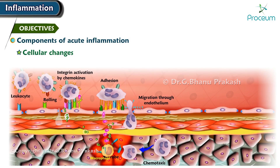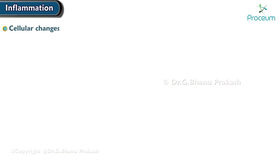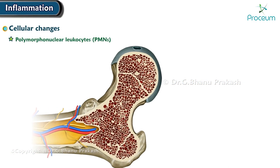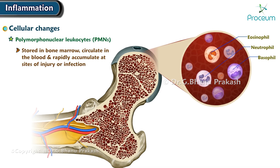Now, let's move on to cellular changes. Polymorphonuclear leukocytes, or PMNs, are stored in bone marrow, circulate in the blood, and rapidly accumulate at sites of injury or infection. They predominate in acute inflammation.